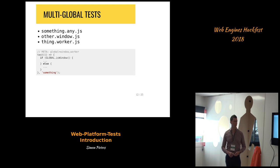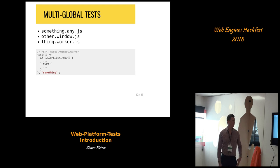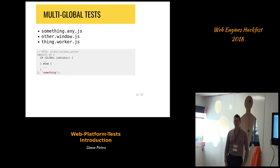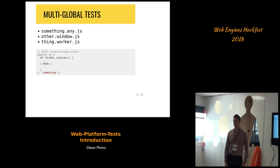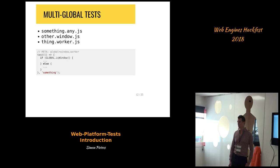There's also a global property exposed on the global with some utility functions to tell if you're in a window or in a worker. The other options are .window.js for window-specific tests, or .worker.js for dedicated worker tests.